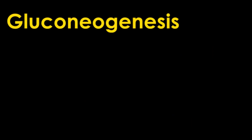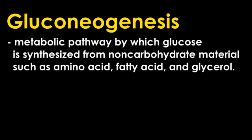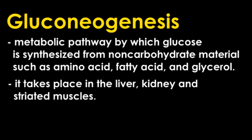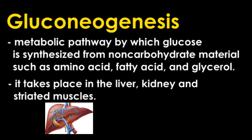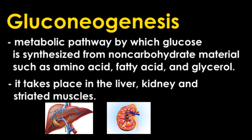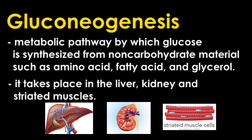Last is gluconeogenesis — the metabolic pathway by which glucose is synthesized from non-carbohydrate materials such as amino acids, fatty acids, and glycerol. It takes place in the liver, kidney, and striated muscles.